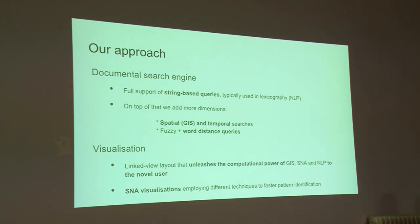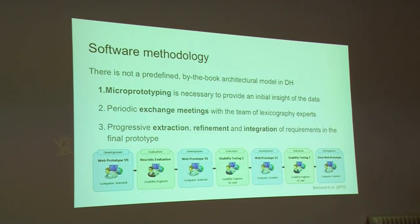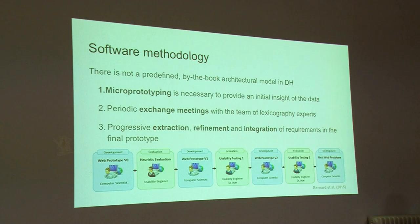We tried to create a system with multiple views that allows us to look at the data from different angles. We also wanted to include social network analysis because the combination of that approach with visualization actually makes it easier to find relations and patterns in the networks. To develop our system, we followed an iterative process: we started by creating small, simple prototypes that we gave to lexicographers and experts to validate, and with their feedback we refined and improved our system to reach the final point of development.